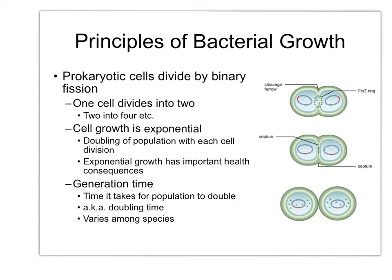This is an equilateral split, meaning that one parent cell will split into two roughly equally sized daughter cells. There are a few other methods as well. For instance, you can have budding, where a parent cell grows a small cell budding off of it that will then grow larger and eventually drop off.